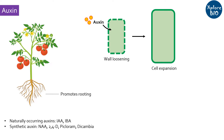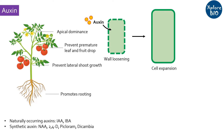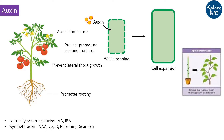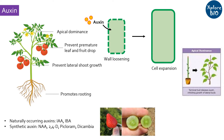Auxin prevents premature leaf and fruit drop. It leads to apical dominance, due to which the primary shoot grows more as compared to the lateral shoot, and removal of the apical bud results in enhanced growth of lateral shoots. Horticulturists and gardeners often cut the shoot tip to promote lateral growth and bushiness. It also promotes parthenocarpy, due to which fruits are produced seedless.